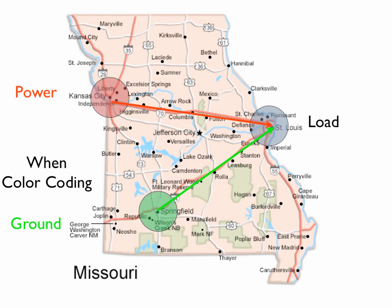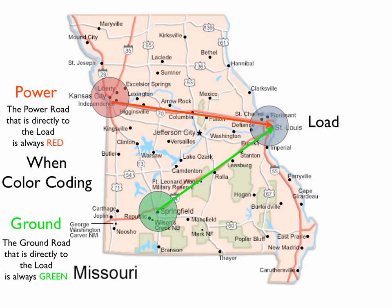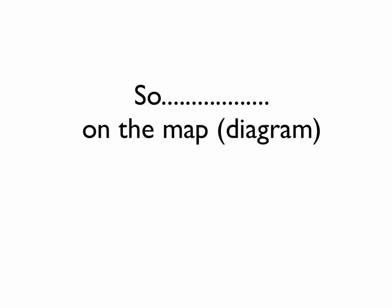Now the power, when you're color coding, the power road that is directly to the load is always colored red. And the ground road that is directly to the load is always colored green. That's true on our electrical diagrams.